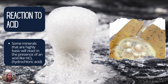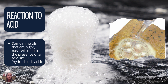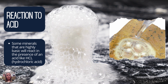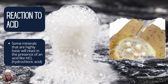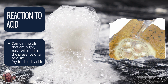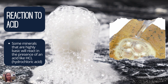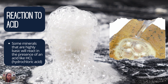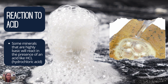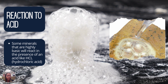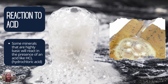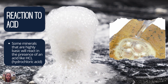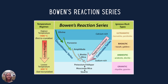Then we have reaction to acid. Some minerals, when you apply hydrochloric acid, will react because they are very basic. An example is calcite — calcite is made up of calcium carbonate, which is a base. So if you put hydrochloric acid on that base, it will react and it will bubble.